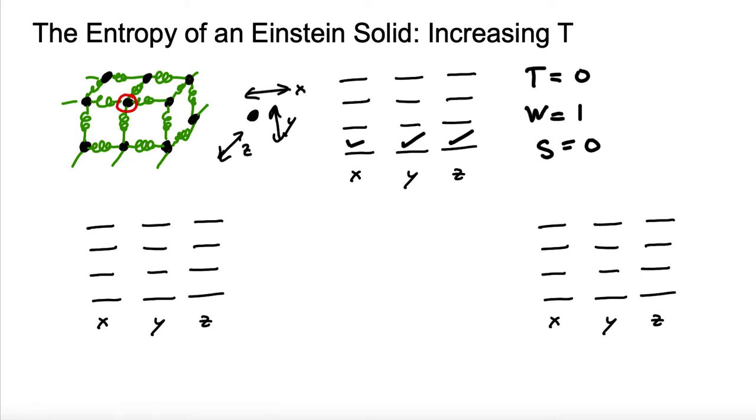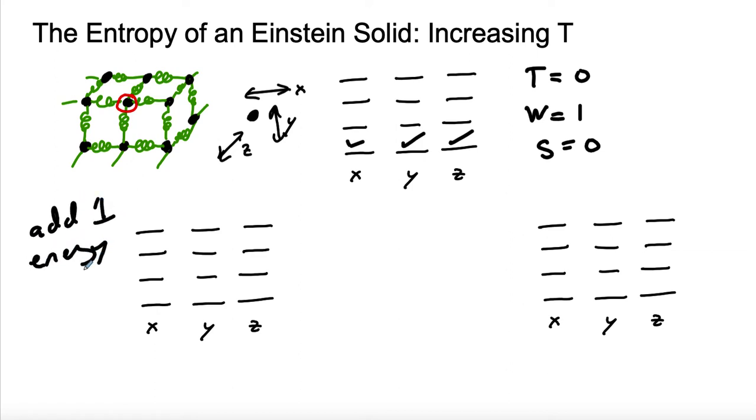So imagine that we add a single energy unit. So what I mean is enough that we can put one of these things not in the ground state. We can see we could put that energy unit here, here, or here, but the other two have to be in the ground state. We only have one energy unit to play with. So w is equal to three.